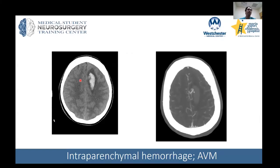This is a CAT scan showing hyperdense or bright material, concerning for blood. We would call this an intraparenchymal hemorrhage, meaning within the brain tissue. 'Intra' and 'parenchyma' meaning brain tissue.